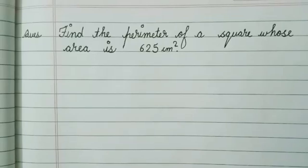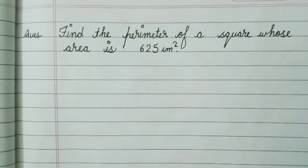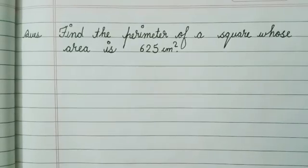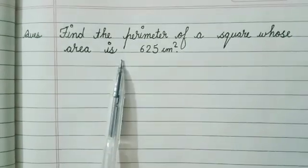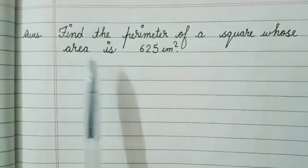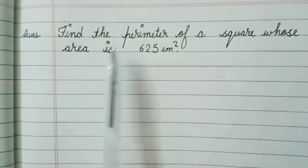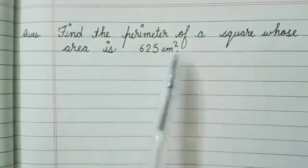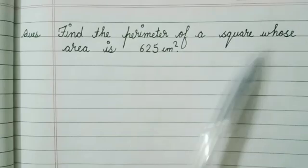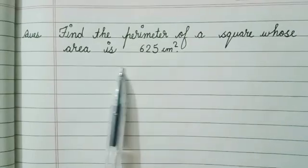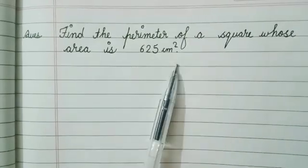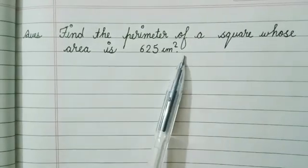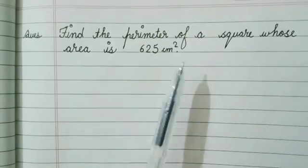Hi friends, welcome back to my channel. Today we are going to find the solution of this question: find the perimeter of a square whose area is 625 centimeter square.